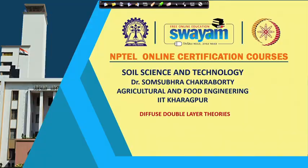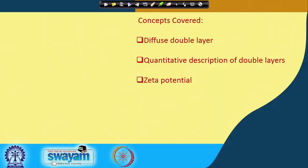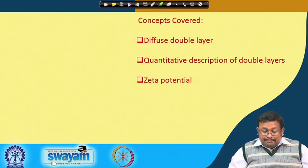Welcome to this new week of lectures for Soil Science and Technology. We will start with the topic of diffuse double layer theories, which is very important for different soil physical and chemical properties. We will cover what is the diffuse double layer, the different types of diffuse double layers, the quantitative description of double layers, and then zeta potential and isoelectric points.